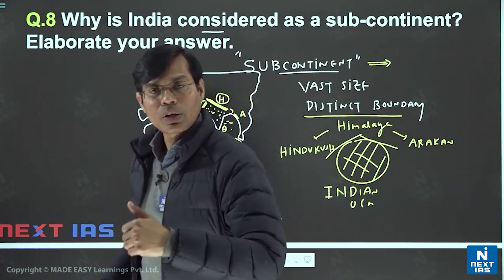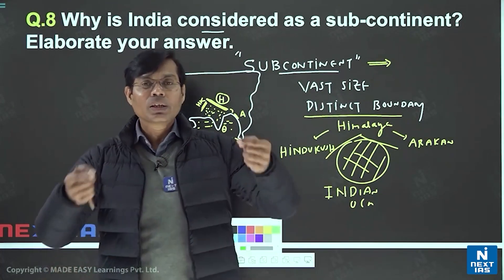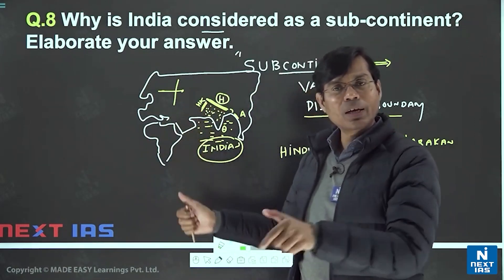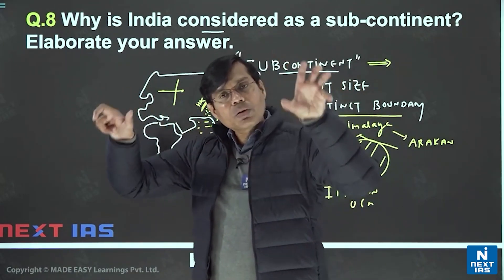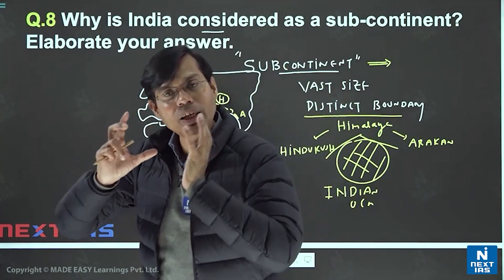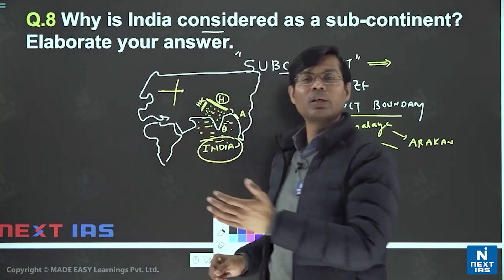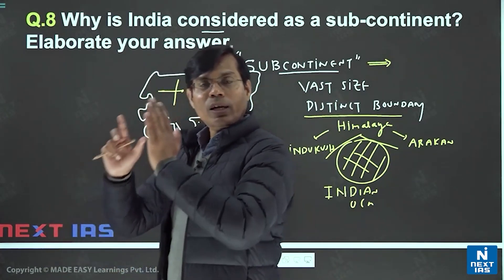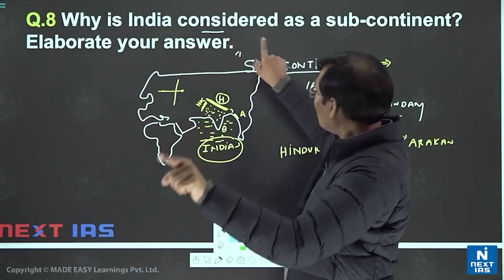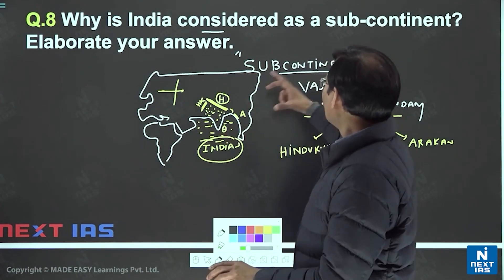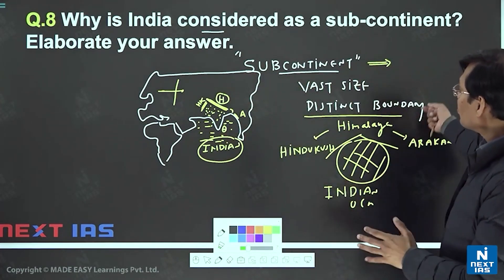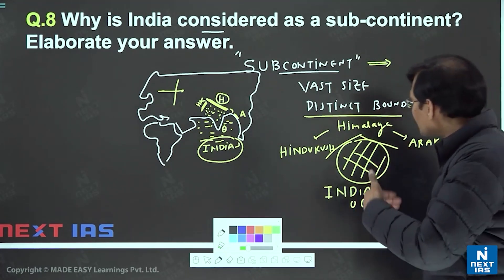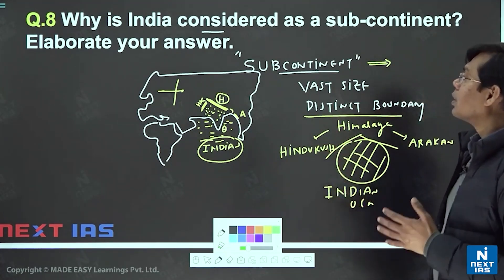Professor Chisholm and several other scholars noted that nature has demarcated the best region for a subcontinent — that is India. India has been given a well-demarcated area by nature. Scholars have mentioned that India is perfectly demarcated by natural boundaries from all sides, making it perfect to be called a subcontinent due to its vast size as well as its distinct boundaries.